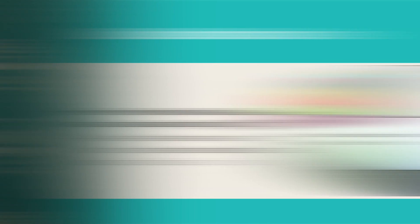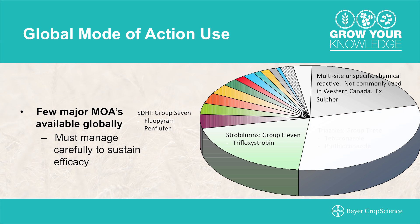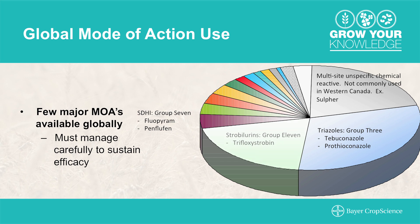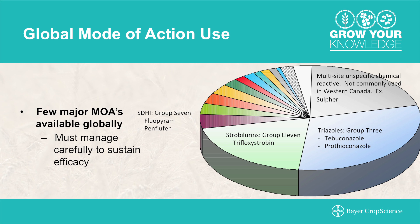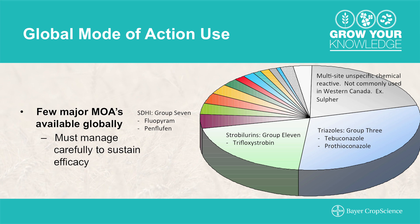There are two major modes of action for fungicides used in Western Canada today, with a third increasingly being developed. The first are triazoles, or Group 3 chemistries — active ingredients such as tebuconazole and prothioconazole belong to this group. The second are strobilurins, or Group 11 chemistries — for example, trifloxystrobin. And there are more and more active ingredients being developed under Group 7, the SDHIs, including penflufin and fluopyram.